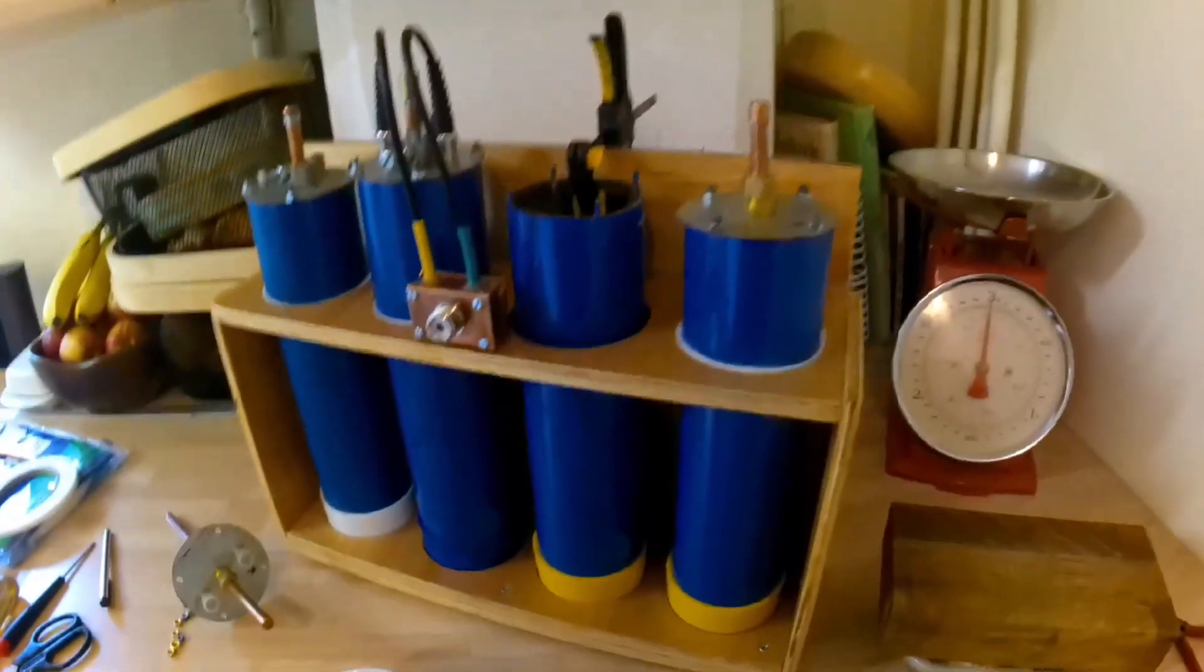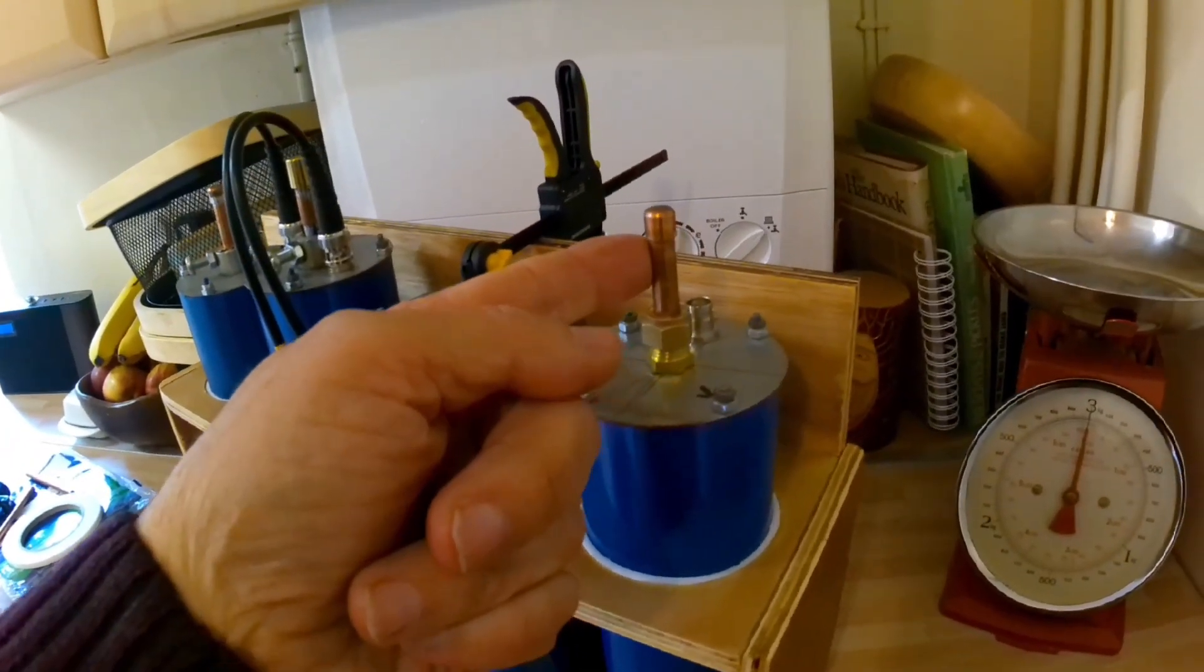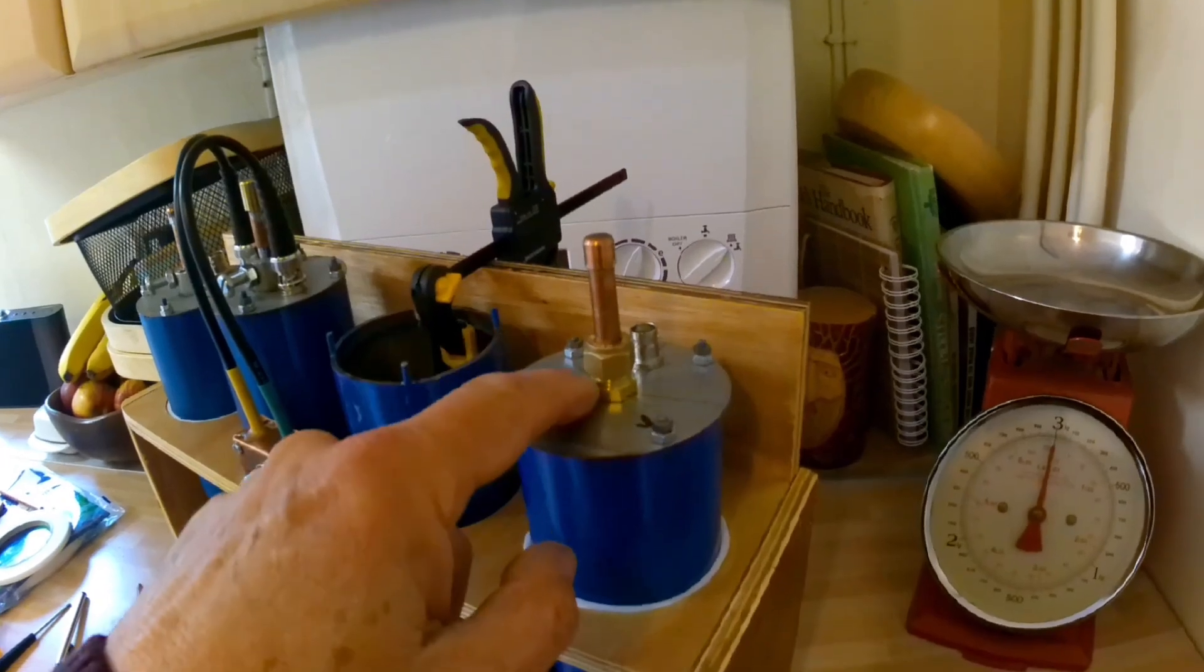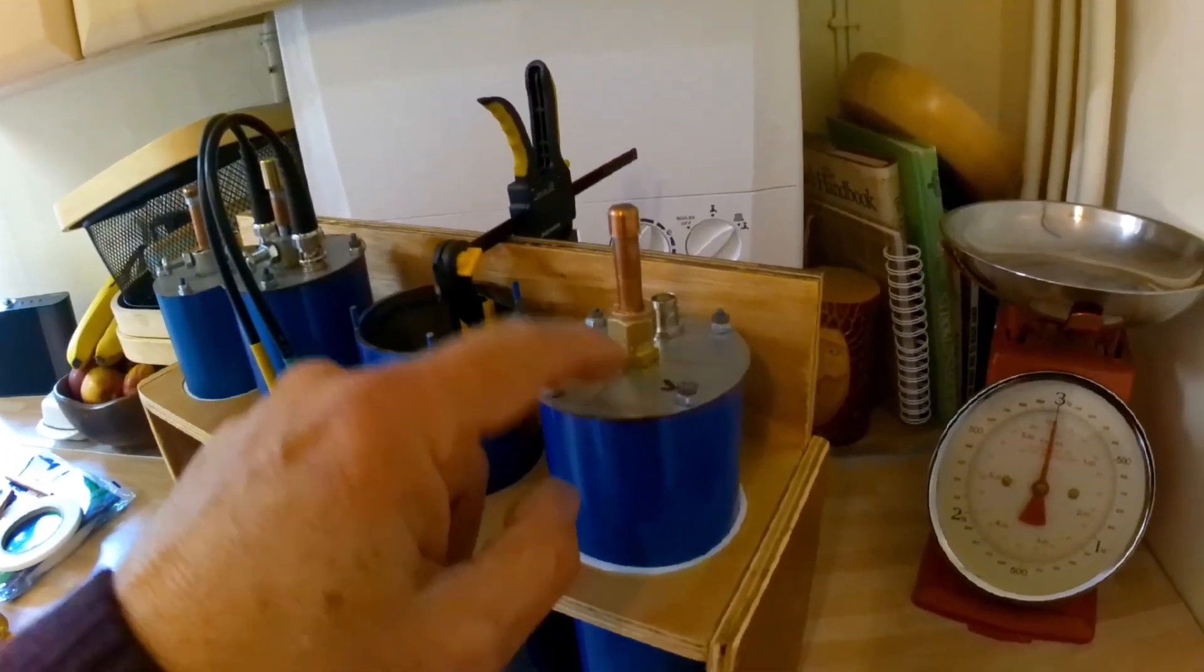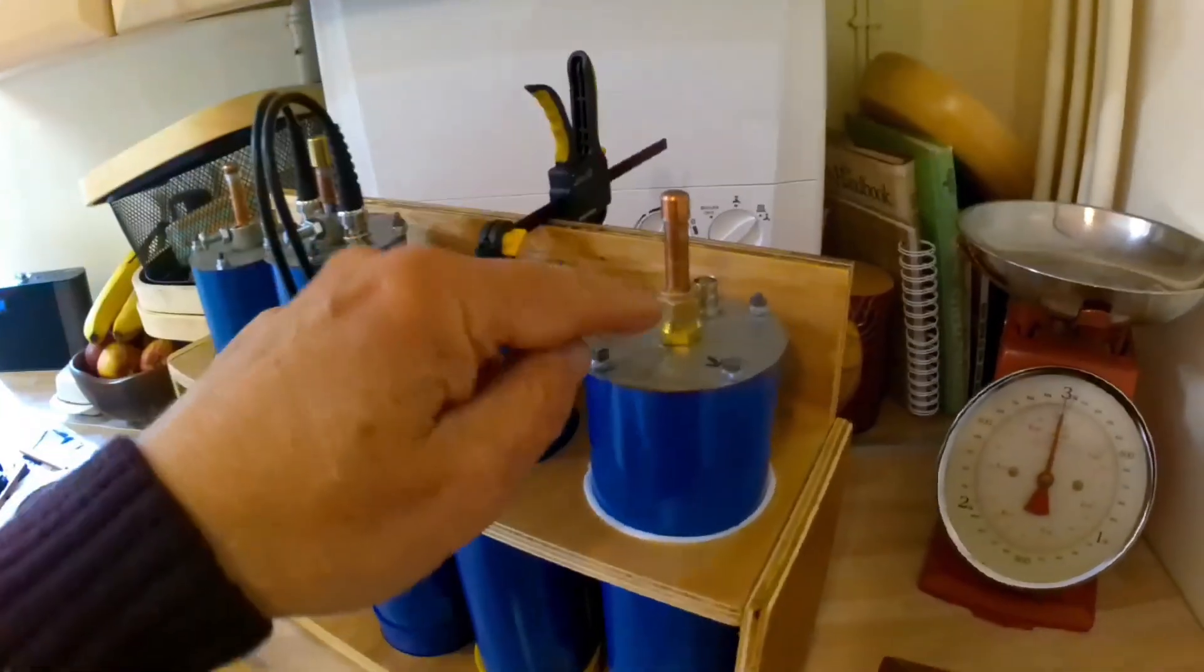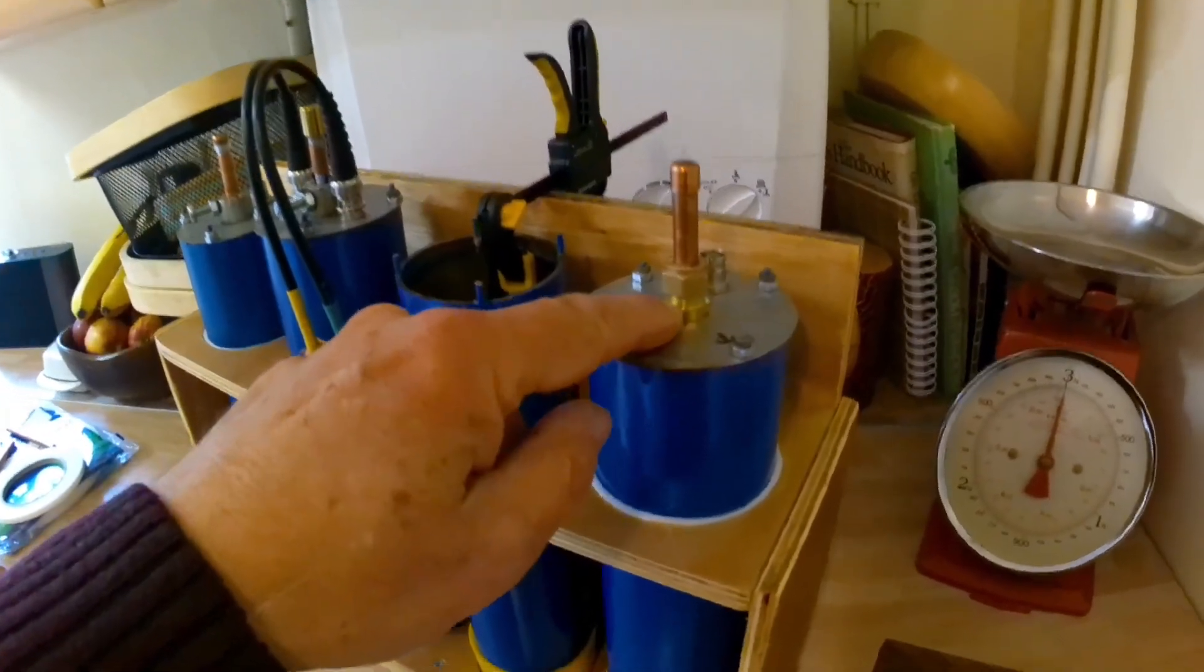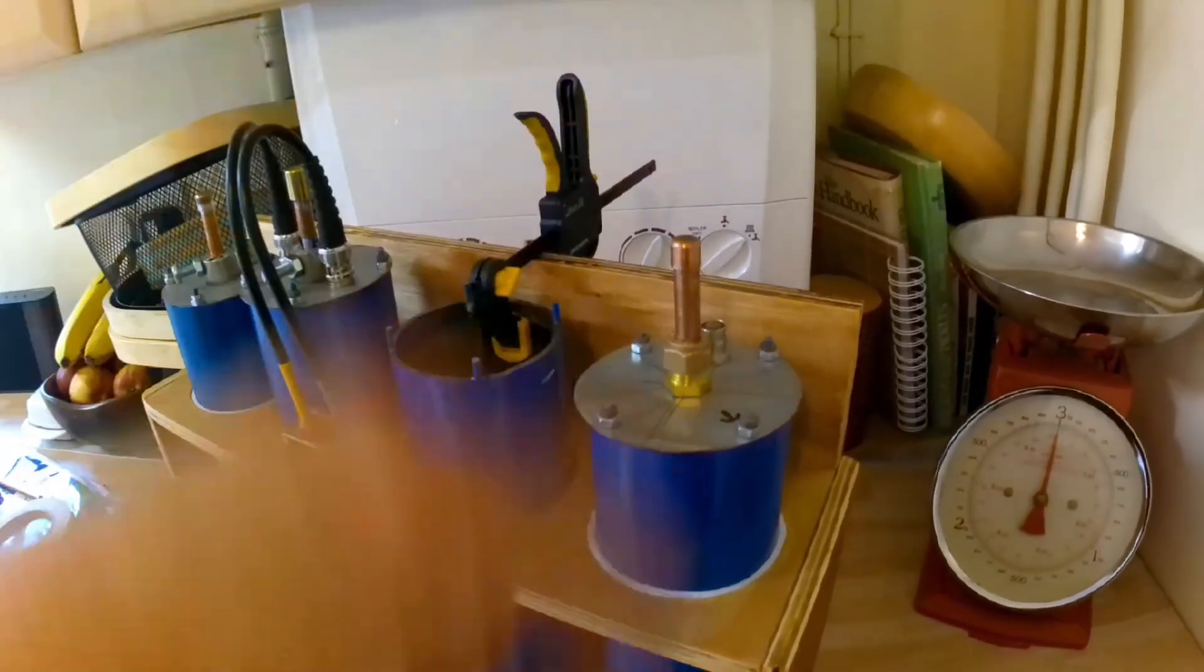But one question was the size of the copper pipe, which is 8mm. And did I do anything with the olives? Which I have done. I've cut a slot in it so it makes it easy to slide up and down. And I drilled the inline copper fitting, brass fitting, so the pipe can go all the way through.